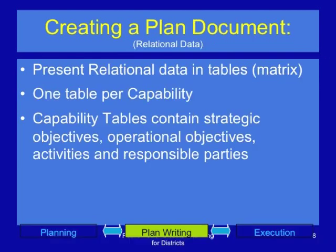Present relational data in tables — that is, a matrix — with one table per capability. The capability tables contain strategic objectives, operational objectives and activities, responsible parties, timelines, and budgets.